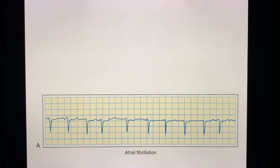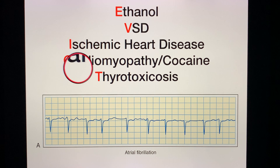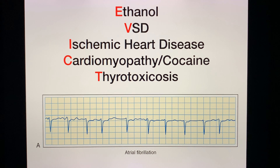This is the illustration on atrial fibrillation in your textbook. Don't forget this mnemonic: EVICT. That's Ethanol, Ventricular septal defect or Valvular heart disease (VHD), Ischemic heart disease, Cardiomyopathy or Cocaine, and Thyrotoxicosis. These are the common causes or etiologies of atrial fibrillation.